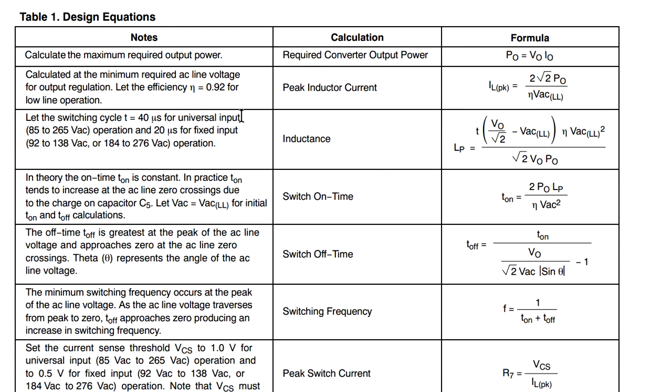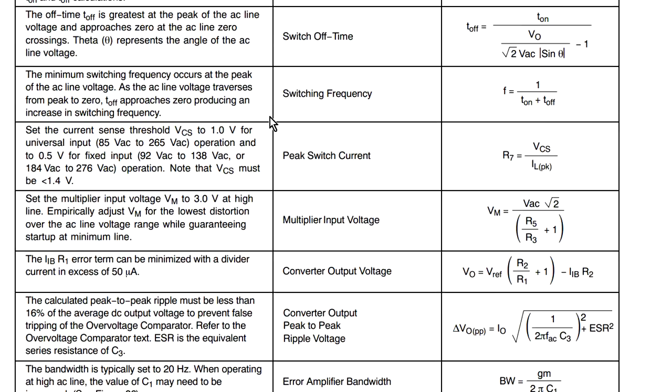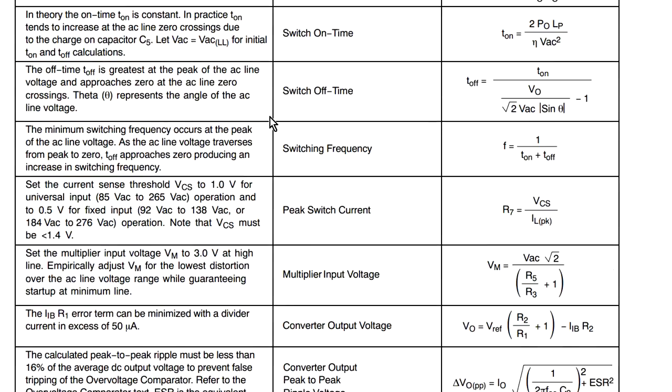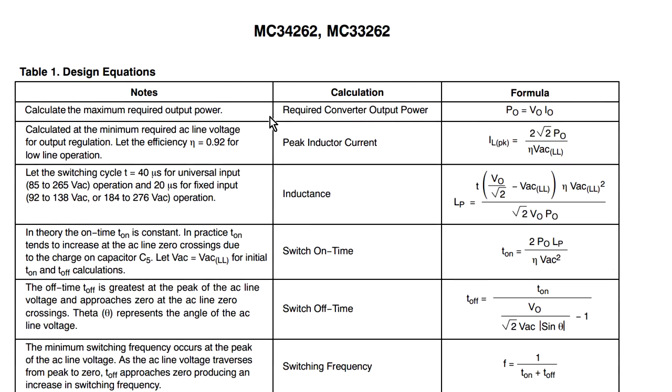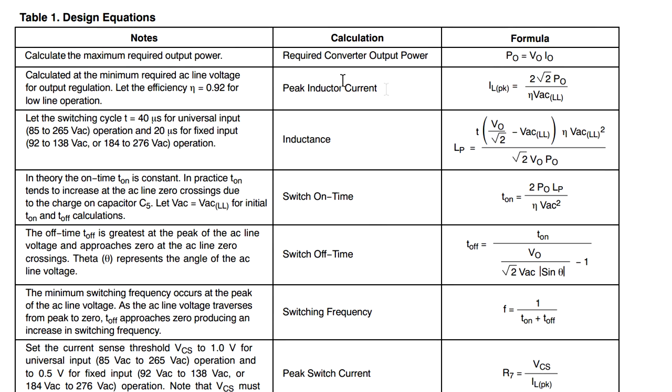Down here we've got our design equations, and there's a whole bunch of them. You might have seen me go through similar equations like this before for DC to DC converter devices. One of the problems with this is, let's say you're trying to calculate the required converter output power. Well what is that?